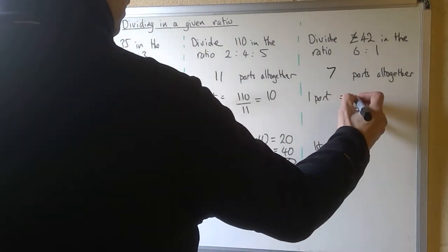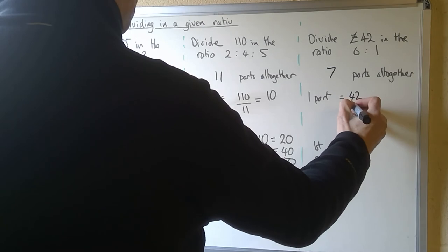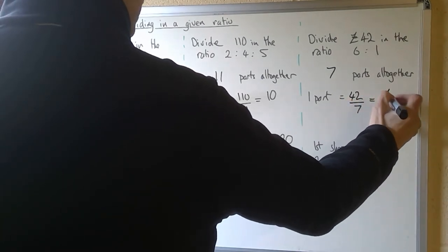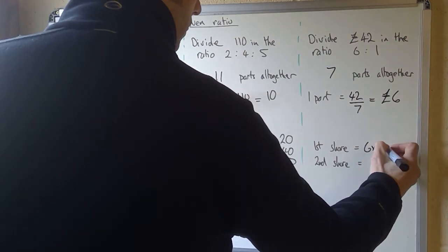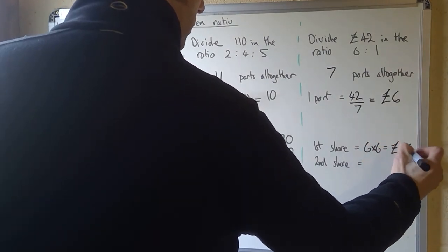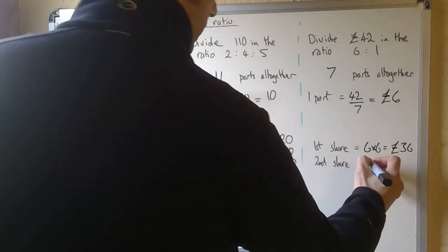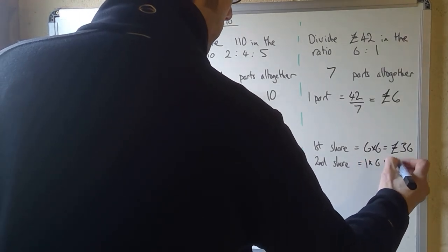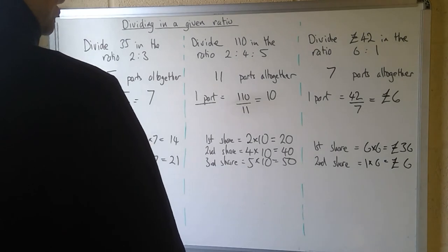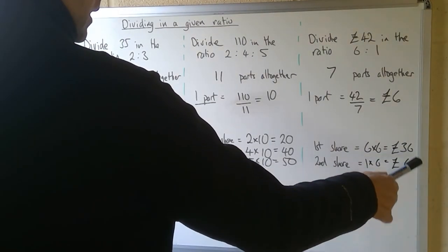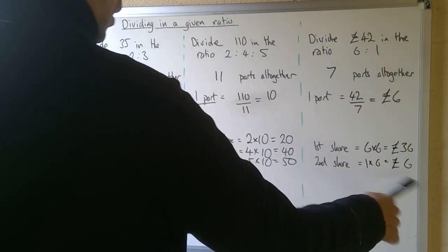42 divided by 7 is £6. So the first share is six lots of £6, which is £36, and the second share is simply one lot of £6, which is £6. Add those together, I get to £42, and also £36 is six times as big as £6, so that checks out both ways. So three fairly straightforward examples of a very important skill.